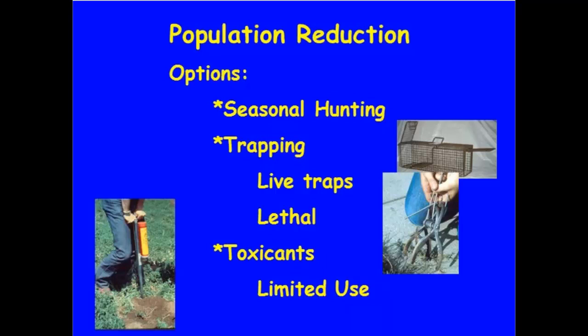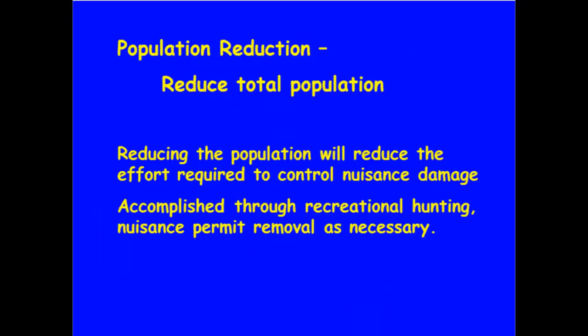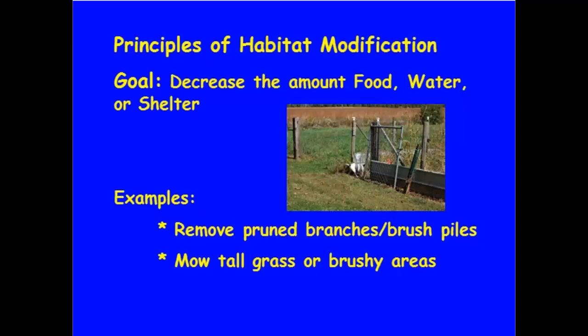Toxicants are another option, but for most animals we don't have toxicants as a population reduction option unless we're talking about rodents. So we'll talk about rodenticides when we get to voles. Our goal with population reduction is looking at trying to reduce the entire population of animals on our property and the surrounding area — not eliminating them, but reducing that population so that other practices we utilize can be more effective.